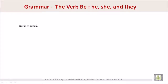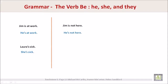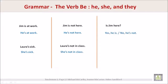Grammar — the verb 'be' with he, she, and they. Jim is at work — he is at work. Laura's sick — she's sick. Jim is not here — he's not here. Laura's not in class — she's not in class. Is Jim here? Yes, he is. No, he's not.